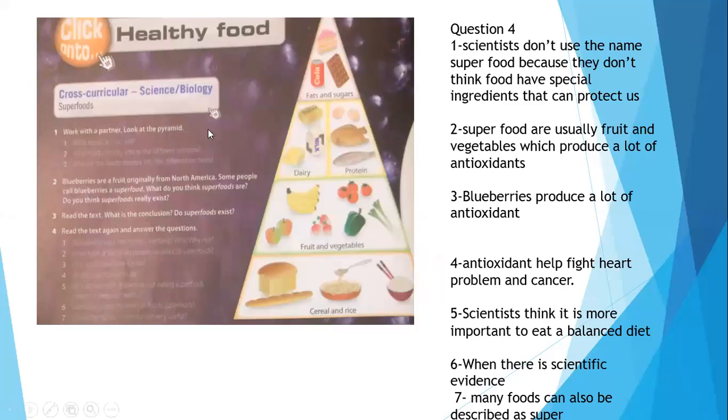Here we have the pyramid of food. We have steps in this pyramid. Here we have cereal and rice. Here we have the fruit and vegetables. In the third one we have dairy. It is something we eat every day. And we have protein like fish, like meat, like egg. And the last one we have fat and sugar like chocolate. This is called food pyramid.